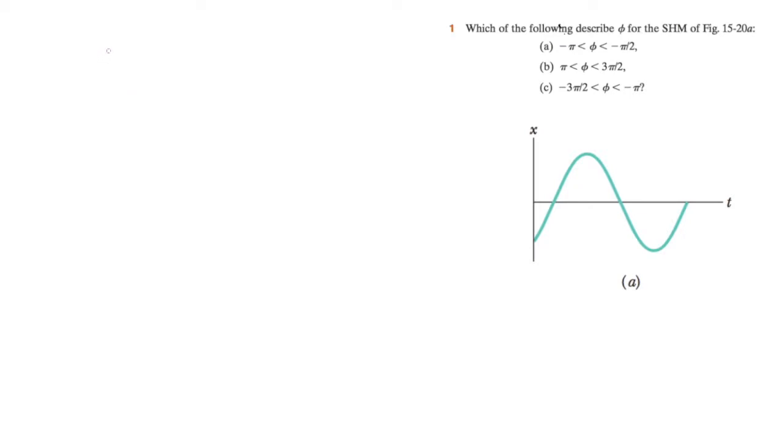So as we know, the displacement is a function of time. It can be written as follows: it's equal to the amplitude of the displacement multiplied by the cosine of omega t plus phi.